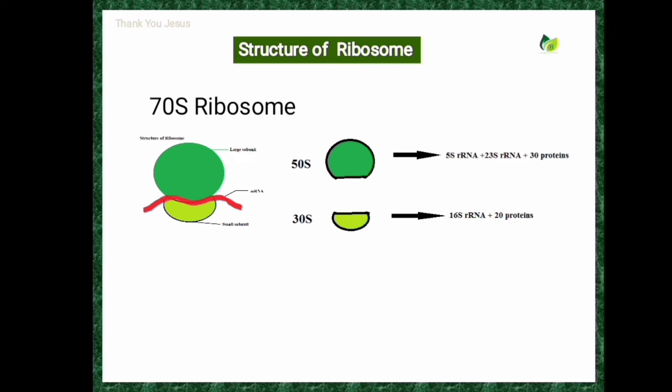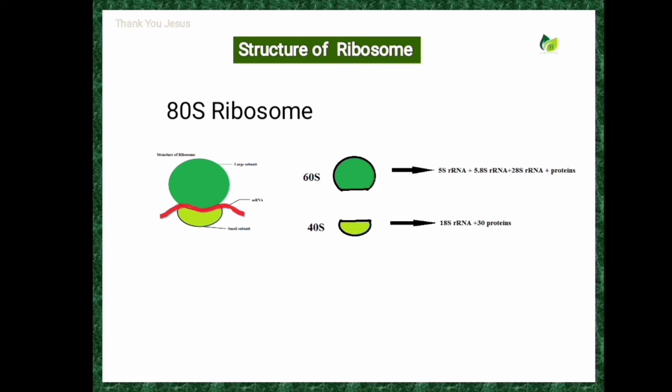The 80S type of ribosome consists of two unequal subunits: the 60S subunit and the 40S subunit. The 60S subunit consists of 5S rRNA plus 5.8S rRNA plus 28S rRNA plus 40 different types of proteins.